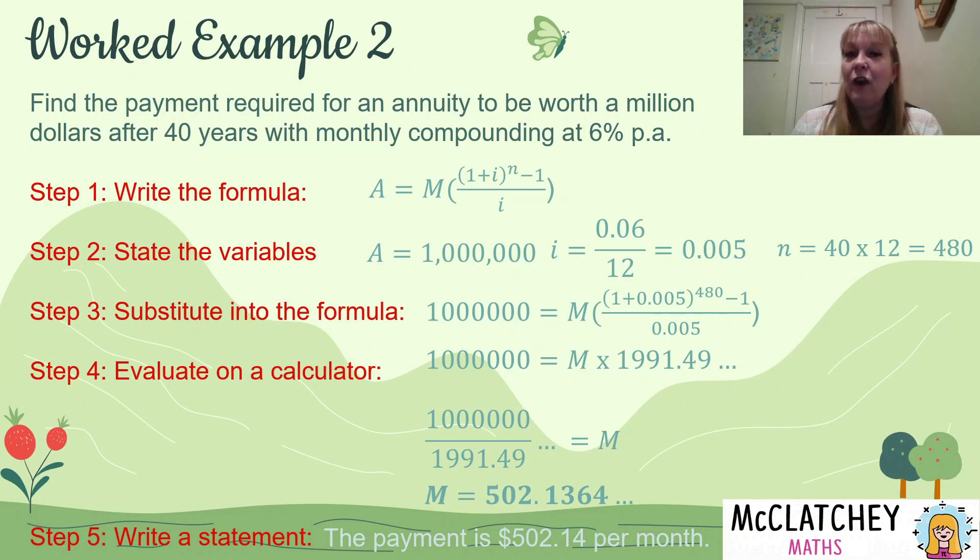So if you need to find how long it would take to get to a million dollars, if you've got your payment, you've got the million dollars is what you're trying to work towards and you've got an interest rate, then you're best to use the iterative function on your calculator and use your recurrence relation. So anytime you've got to find something to do with N, you're going to be looking at our previous video on the recurrence relation and how to do that on the calculator by pressing the equals button many times. So this is not the formula to find i or N. It's really only the formula to find A and M.